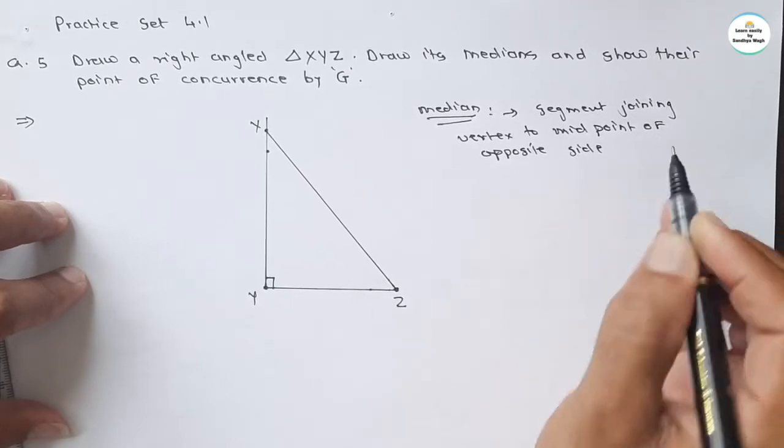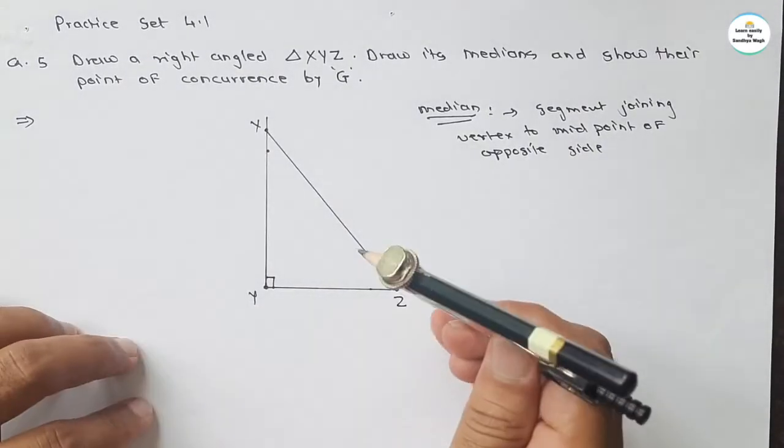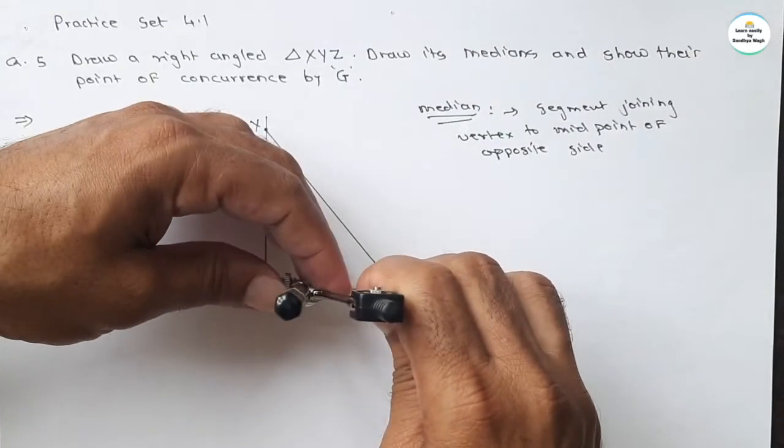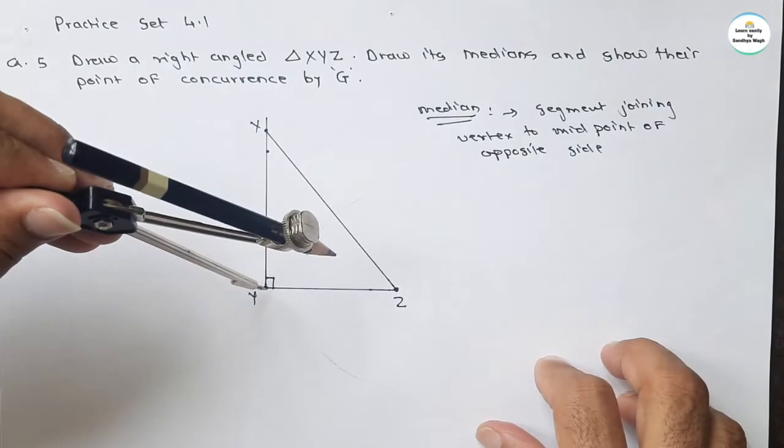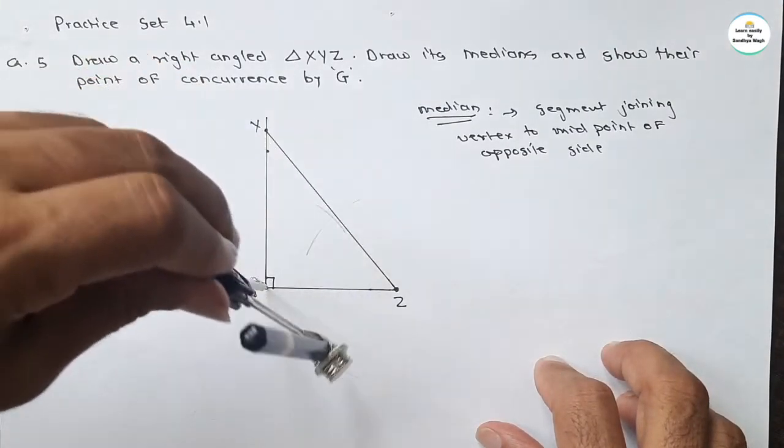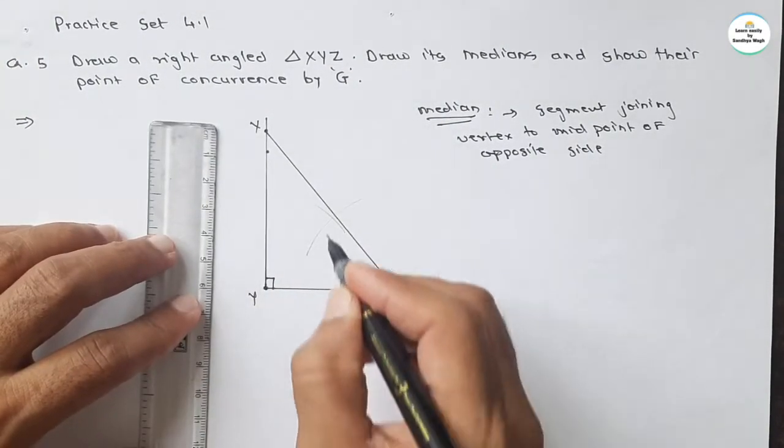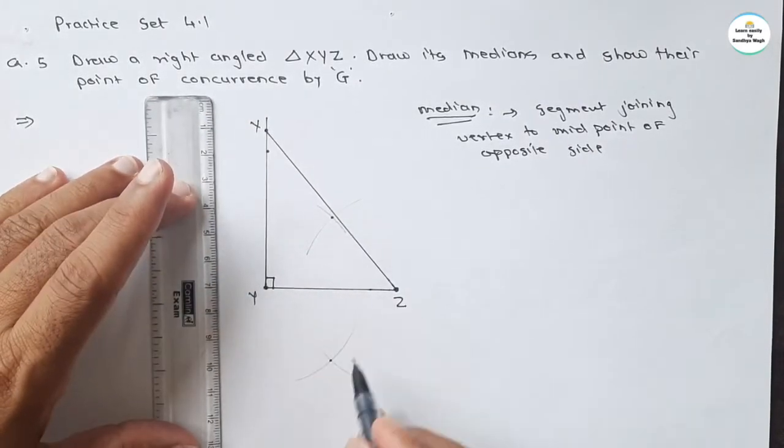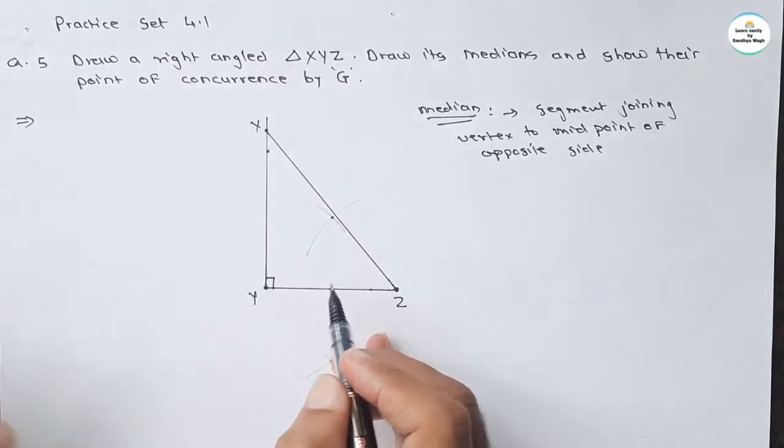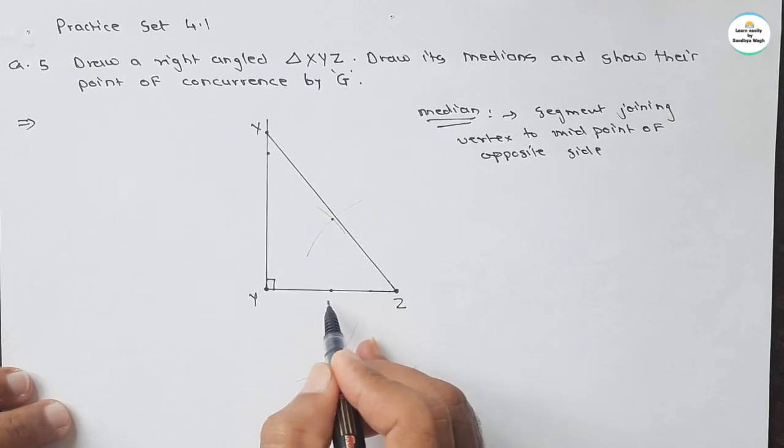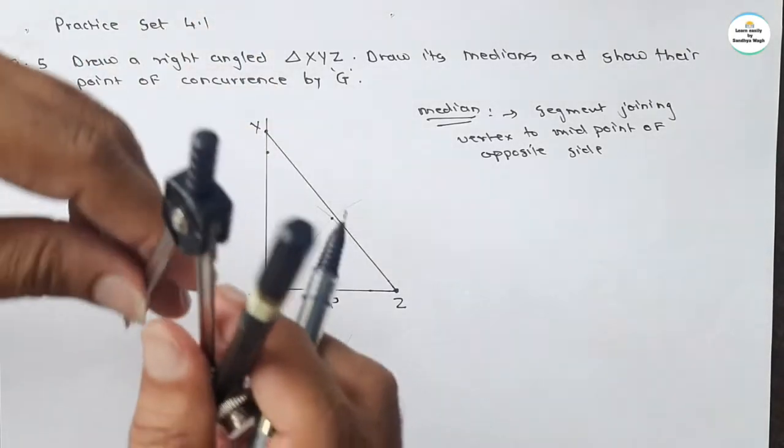First we will have to find the midpoints. To find the midpoint, you can take this compass. Take more than half of this segment, draw arcs on both sides from Y and Z. Then those will intersect each other at two distinct points. Join these two points. That line will intersect YZ at some point, that point is the midpoint of YZ. So it will intersect YZ at point, let it denote T.